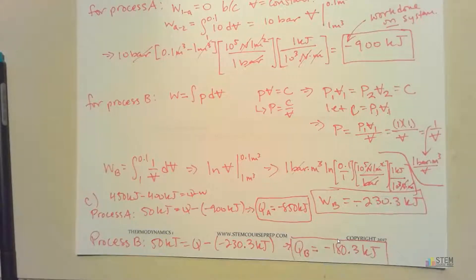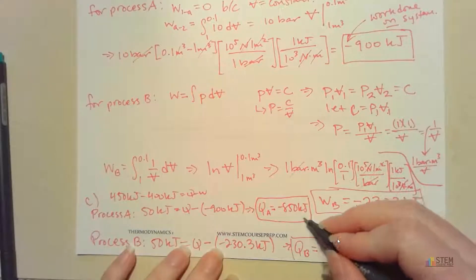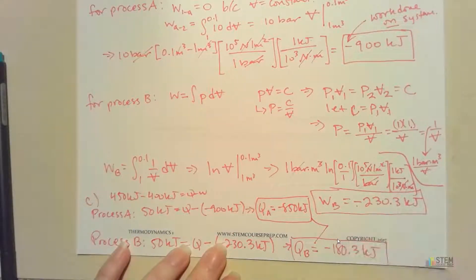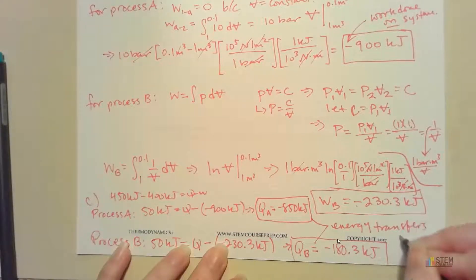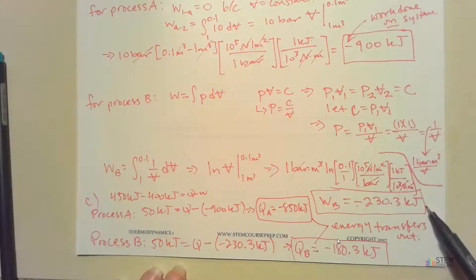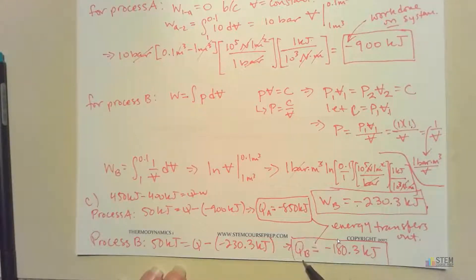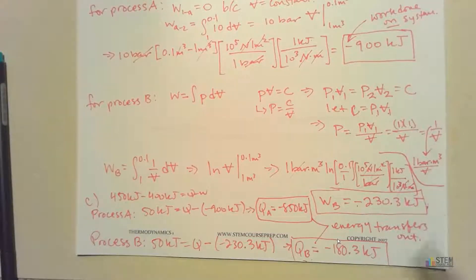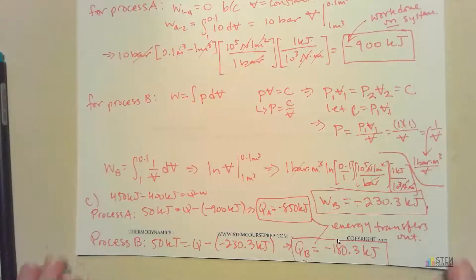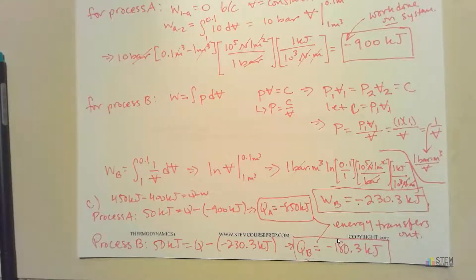Both Q values are negative, meaning heat is transferring out of the system to the surroundings. Meanwhile, work is transferring energy into the system from outside. These two effects together satisfy the energy balance and describe how the system behaves as specified.